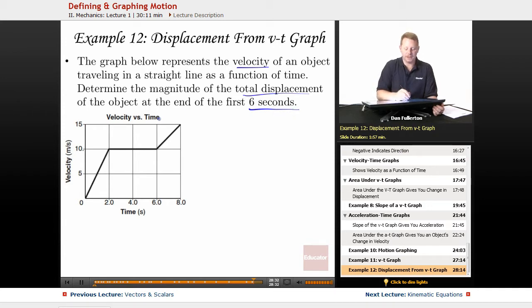So we've got a velocity time graph, we want displacement. Right away you should be thinking area. Velocity time graph, want displacement, you need to take the area. So at 6 seconds, we'll draw our line there, we need the area of everything under the graph to the left of that.